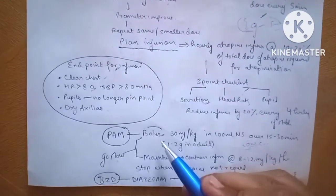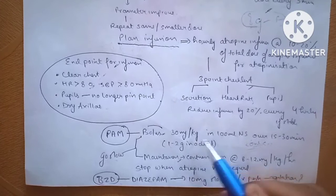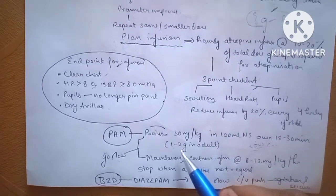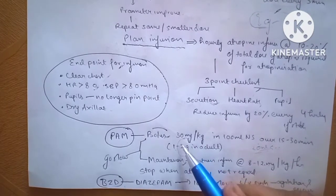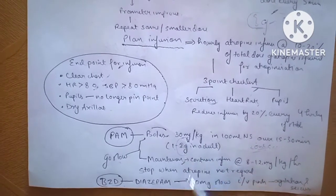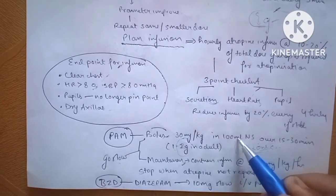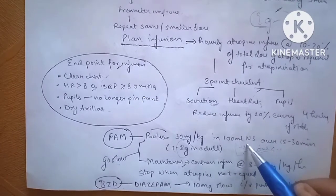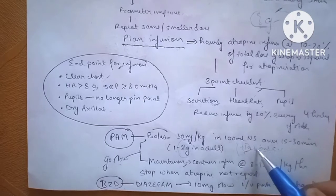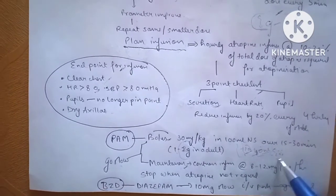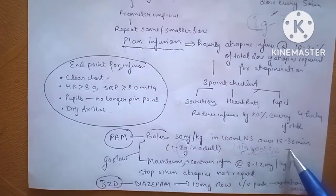The bolus dose is around 30 mg per kg in 100 ml NS over 15 to 30 minutes. Just remember the adult dose is around 2 grams because one ampoule of pralidoxime PAM is around 20 ml and each ampoule is of 1 gram, so around 2 ampoules, that is 40 ml, is given in 100 ml NS over 15 to 30 minutes.